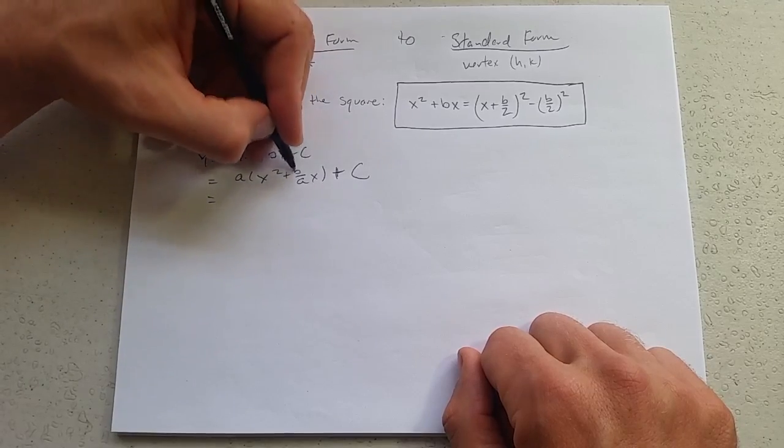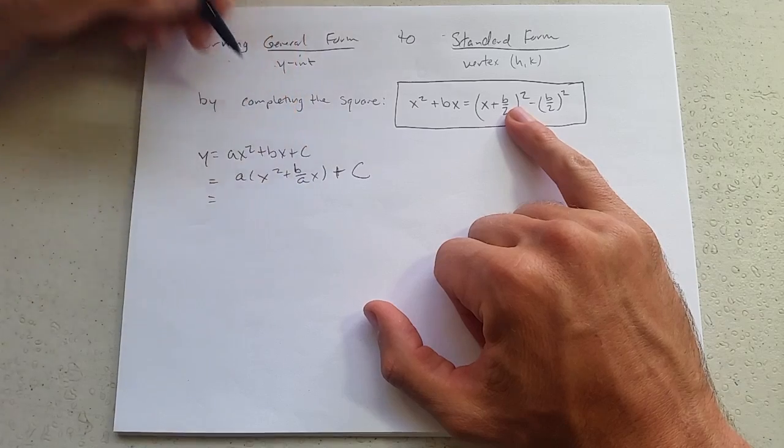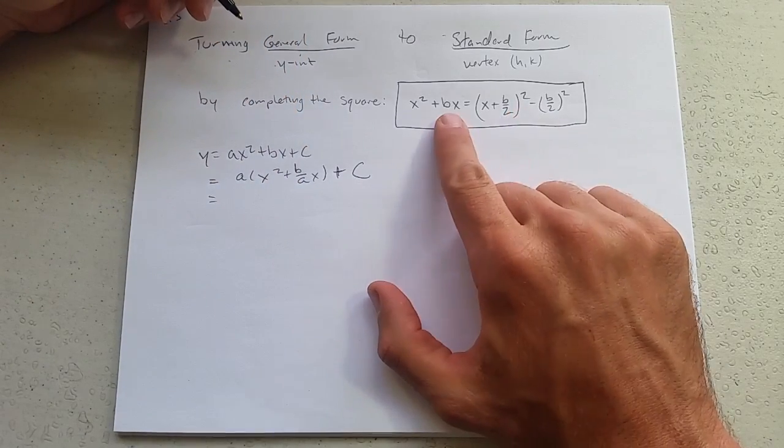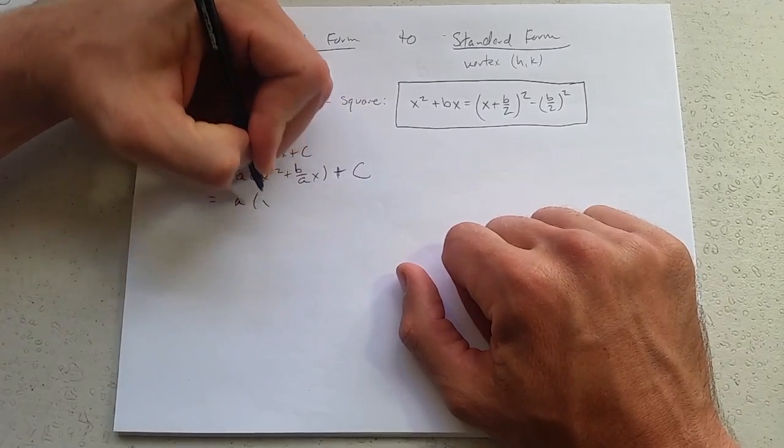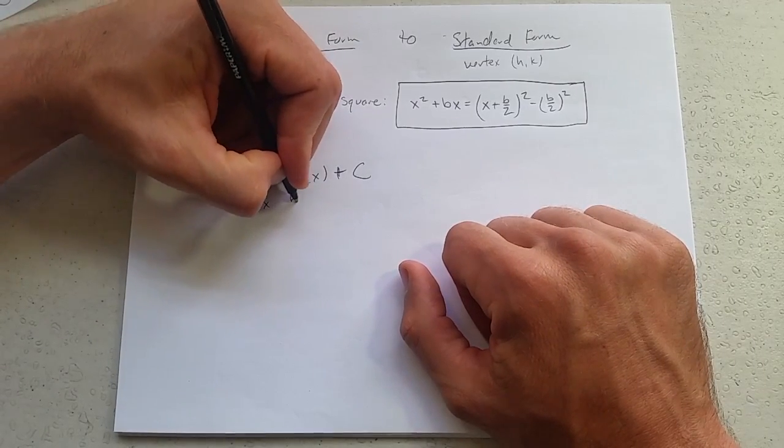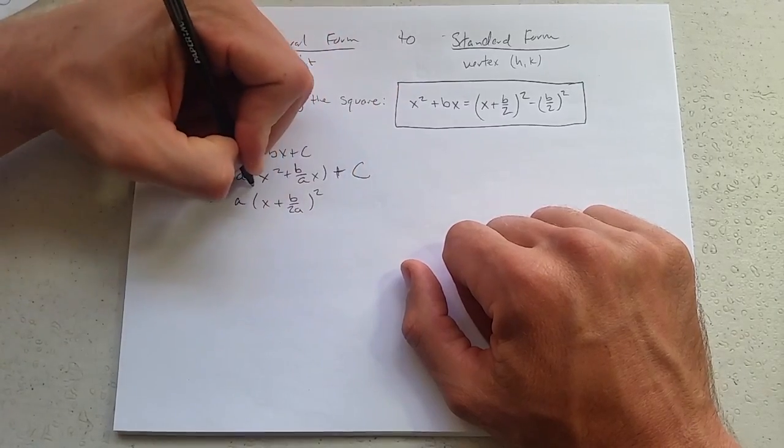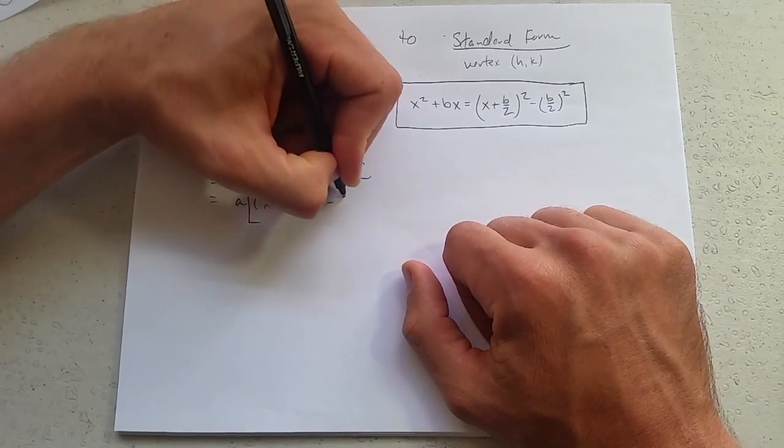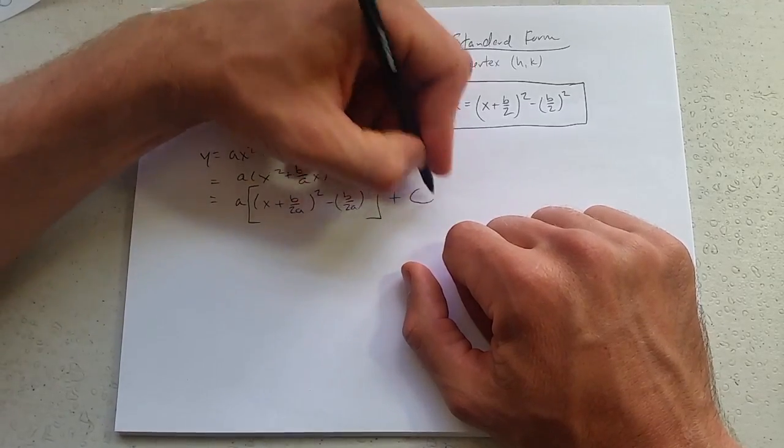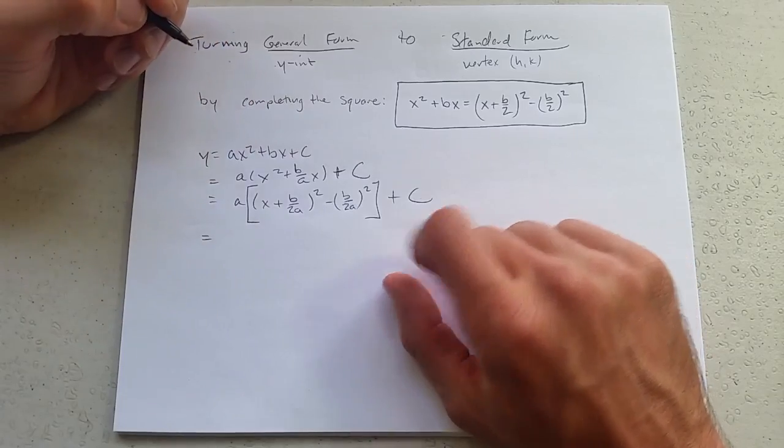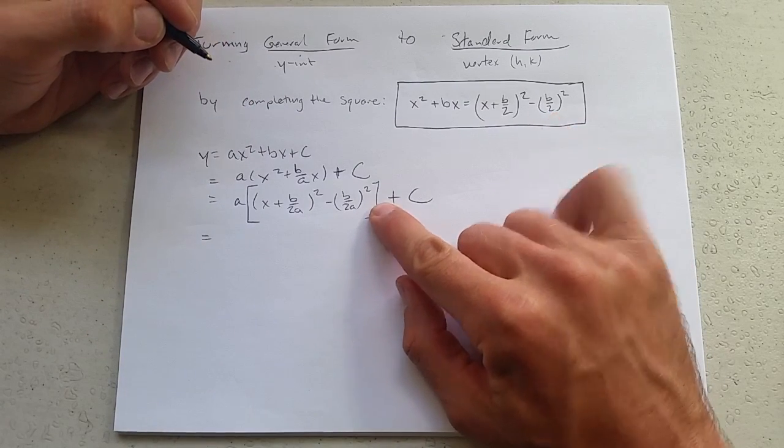And complete the square here. Now it's a little bit weird because b is actually b over a, but all we need to do is think about cutting it in half. And there's our b over, in this case, 2a squared.